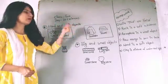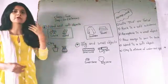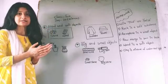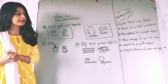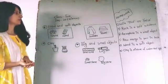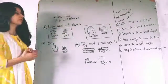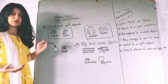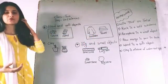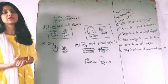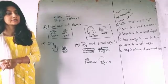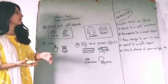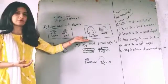Talking about soft objects — those objects which are made from leather, silk, cotton, etc. are soft objects. For example, we have here towel, sweater, etc. So those objects which are made from leather, cotton, and silk are soft objects.